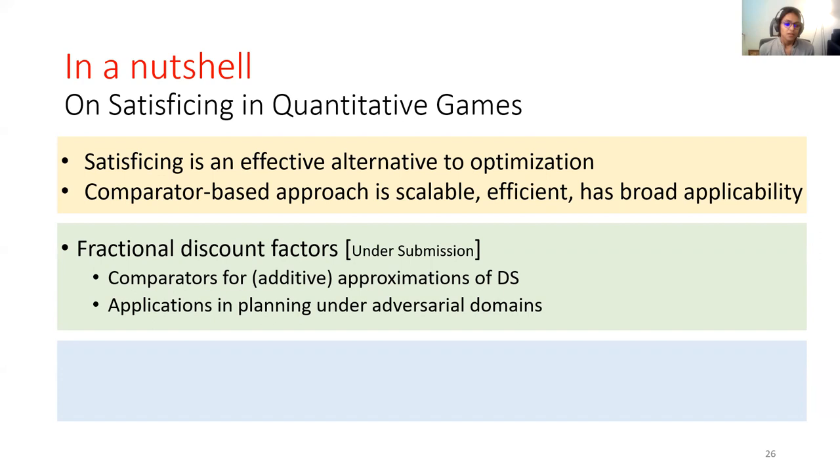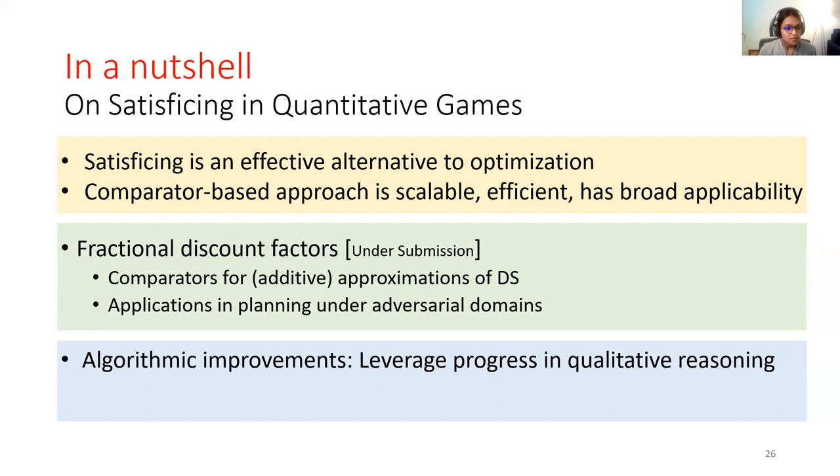In terms of future work, there are really two directions we could pursue from here on. One is to improve the current algorithm and to do it by leveraging progress in qualitative reasoning. So I can imagine, because all of our techniques boil down to automata, one could imagine using several kinds of progresses made in qualitative reasoning, be it symbolic reasoning, be it bounded reasoning, and develop much improved algorithms for performing quantitative synthesis using qualitative methods only.